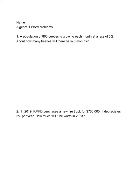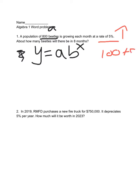Begin with standard form. We have Y equals A times B to the X. A is 800, our growth rate is 5%, it's going up. Everything starts at 100, so 100 plus 5 is 105%, but B must be a decimal, so this would be 1.05.